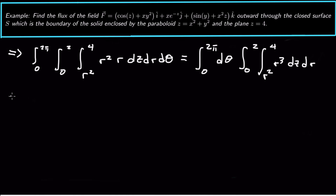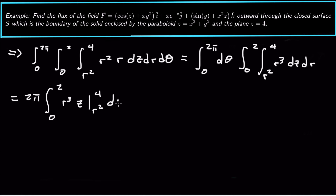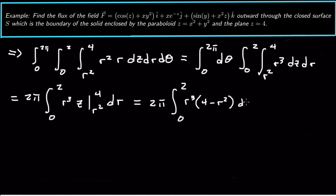Doing the θ integral gives us a factor of 2π out front. Integrating the z part — there's no z in r³ so we just multiply by z — giving us 2π times the integral from 0 to 2 of r³ · z evaluated from r² to 4, dr. Plugging in those bounds for z, we get 2π times the integral from 0 to 2 of r³(4 − r²) dr.